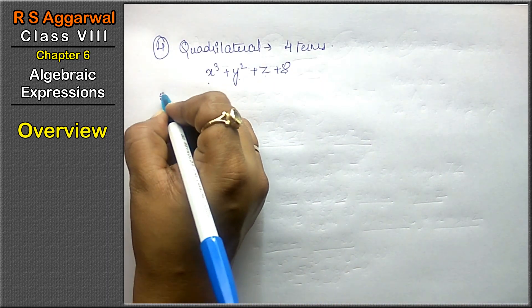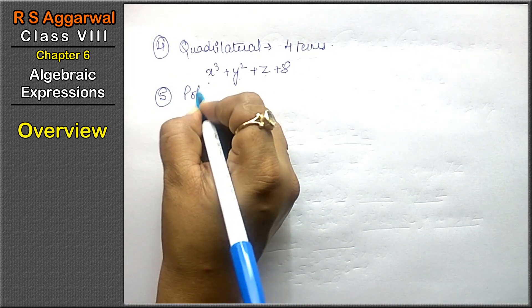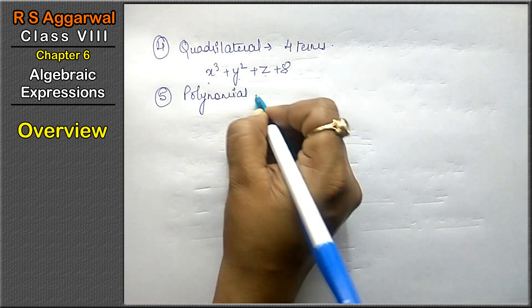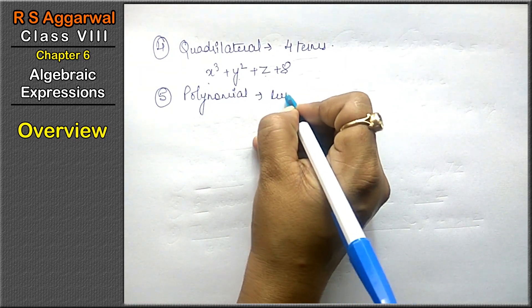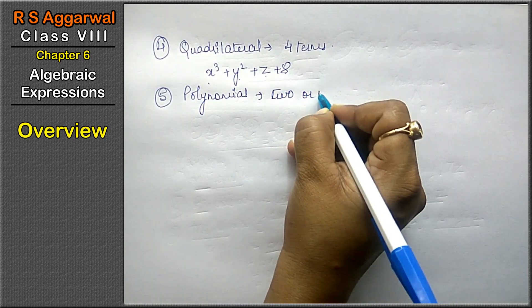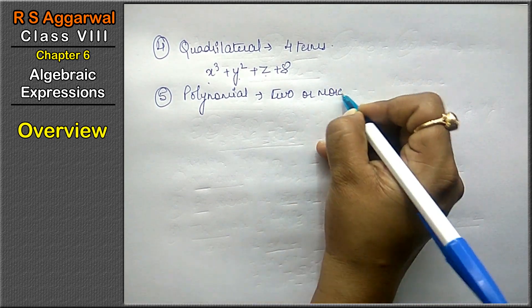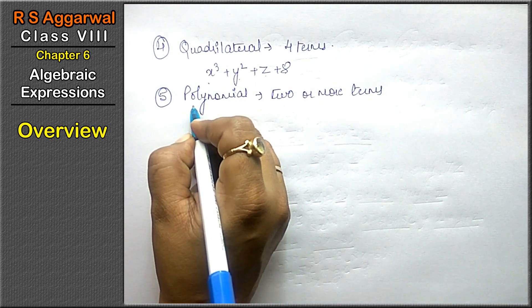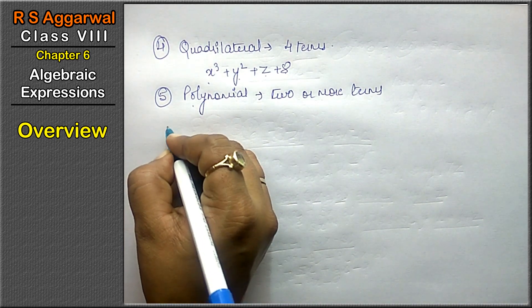Next is polynomial. Polynomial are expressions that have two or more terms. That is called polynomial expressions. Now, one more thing friends,